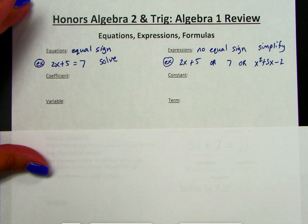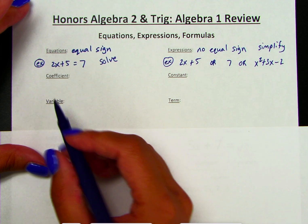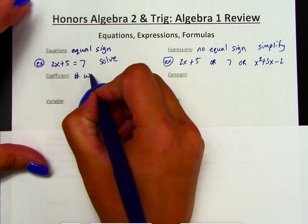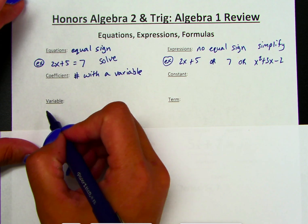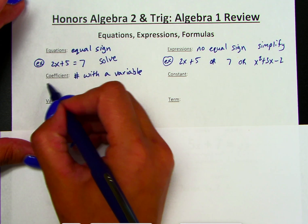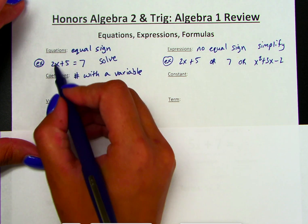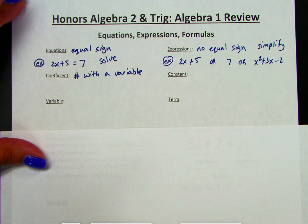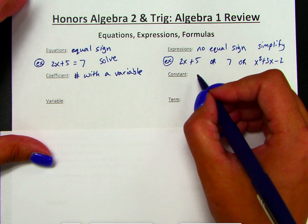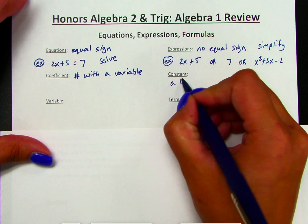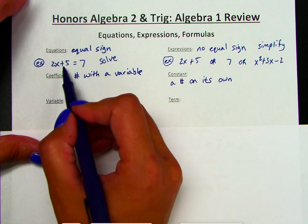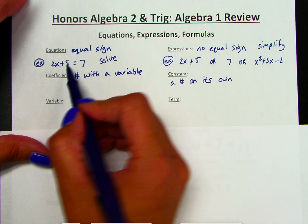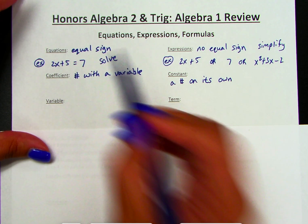Within our equations and expressions, we have other important definitions. A coefficient is a number with a variable. So for example, in the equation 2x plus 5 equals 7, the 2 is a coefficient because it's paired with a variable. Whereas a constant is a number on its own — so 5 would be a constant because it's not paired with a variable, and 7 would also be a constant because it doesn't have a variable.